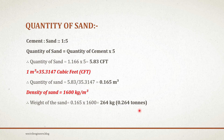To construct a wall of 10 foot long and 6 foot height with a thickness of 4.5 inch, you will be needing 275 bricks, 1 bag of cement, and 264 kg of sand. Thank you guys, thank you for watching.